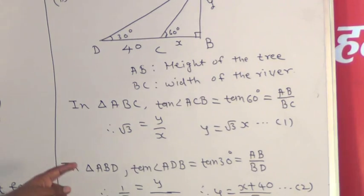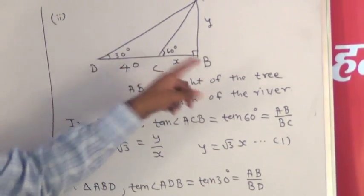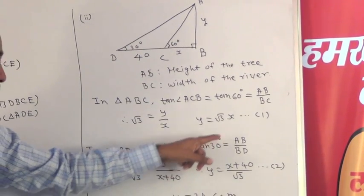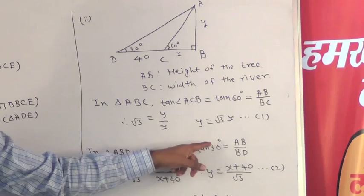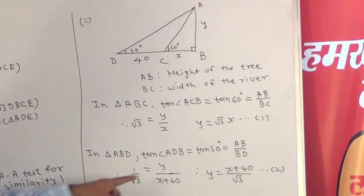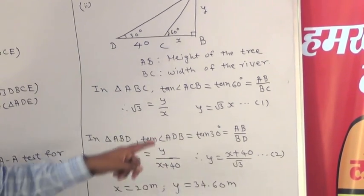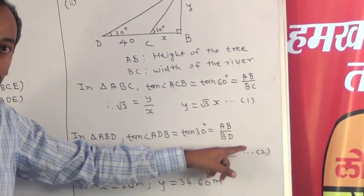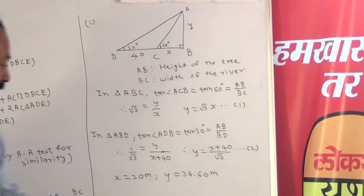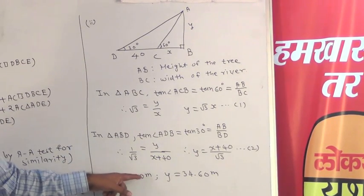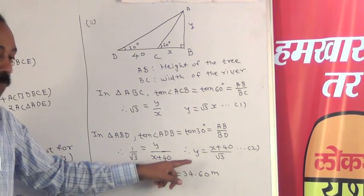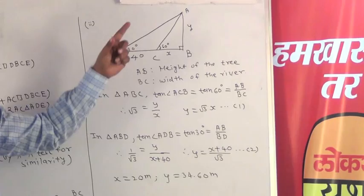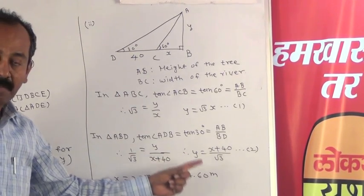In triangle ADB, tan(ADB) equals tan 30° equals AB upon BD. The value of tan 30° is 1/√3, so 1/√3 equals y upon (x + 40), giving y equals (x + 40)/√3 — equation number 2. Solving equations 1 and 2, we get x equals 20 meters and y equals 34.60 meters. So the width of the river is 20 meters and the height of the tree is 34.60 meters.